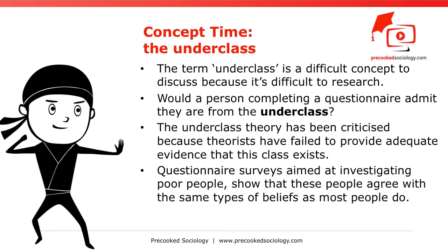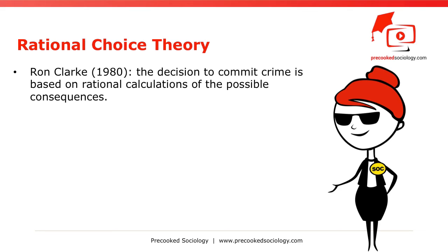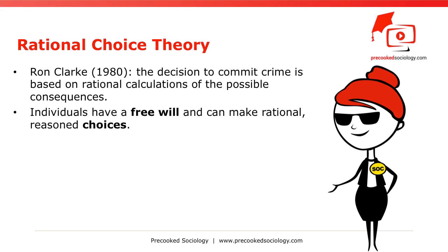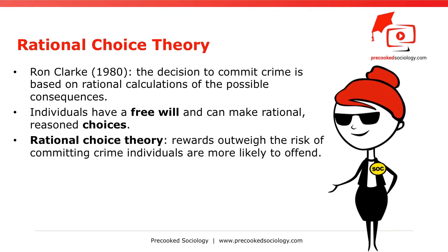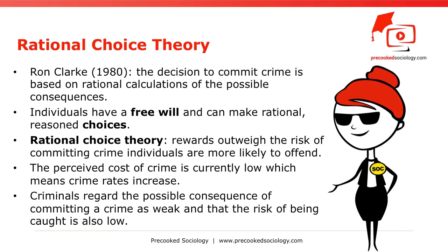Rational Choice Theory: Ron Clarke (1980) states that the decision to commit crime is based on rational calculations of the possible consequences. Individuals have free will and can make rational, reasoned choices. If the rewards outweigh the risk of committing crime compared to non-criminal behavior, individuals are more likely to offend. Right realists believe that the perceived cost of crime is currently low, which means crime rates increase. Criminals regard the possible consequences as weak — for example, low prison sentences, being cautioned, or receiving an ASBO — and also believe that the risk of being caught is low.